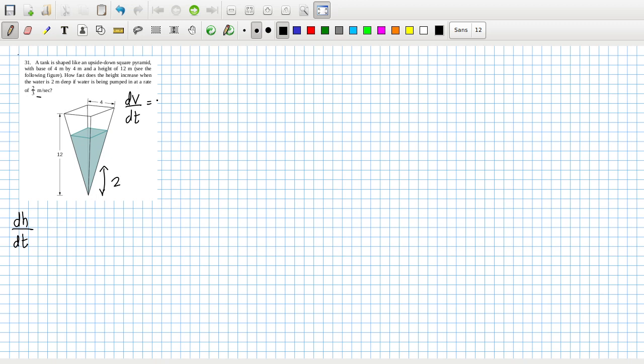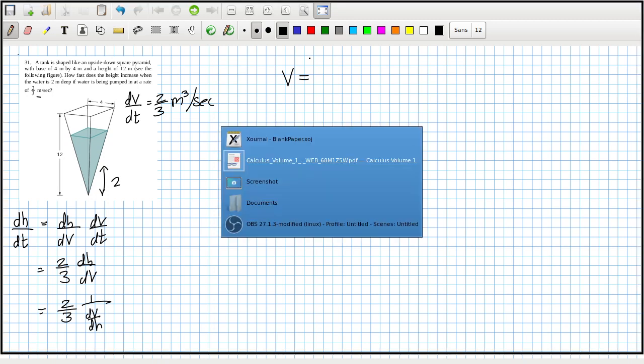dV/dt is 2/3 meters cubed per second. Okay, well dh/dt will be dh/dV times dV/dt, so that would be 2/3 times 1 over dV/dh. So let's try and get the volume of a square based pyramid which I cannot remember off the top of my head, so I will have to Google that.